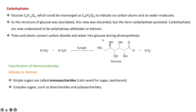Trees and plants convert carbon dioxide and water into glucose in their leaves by the process of photosynthesis. In this process, carbon dioxide reacts with water in the presence of sunlight to give glucose, and glucose is the source of energy.